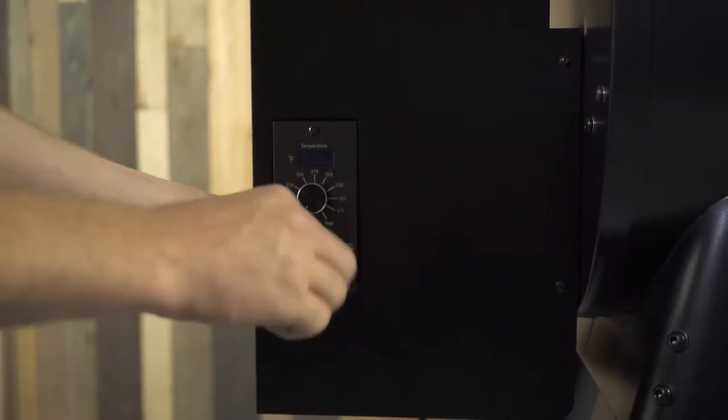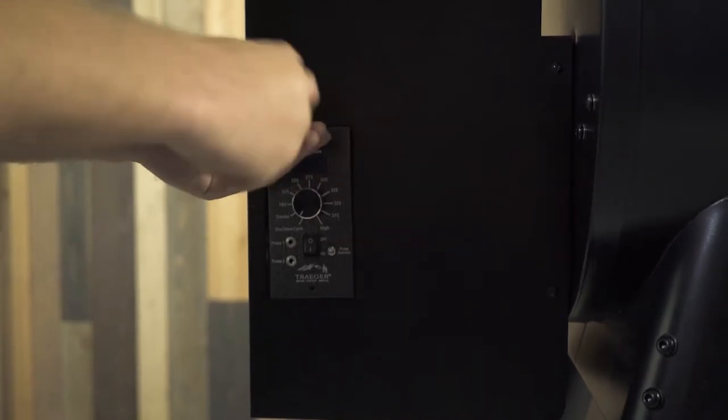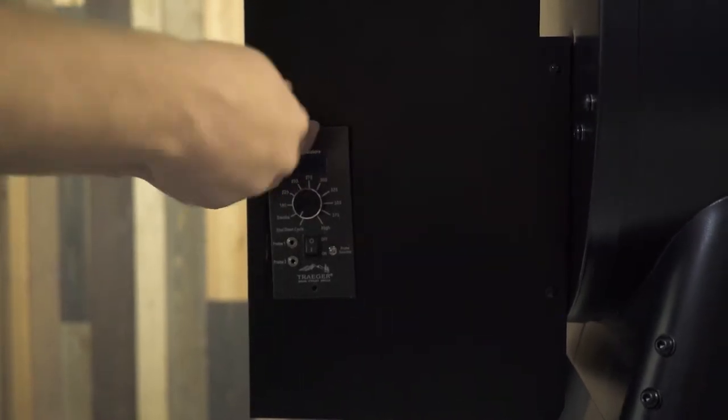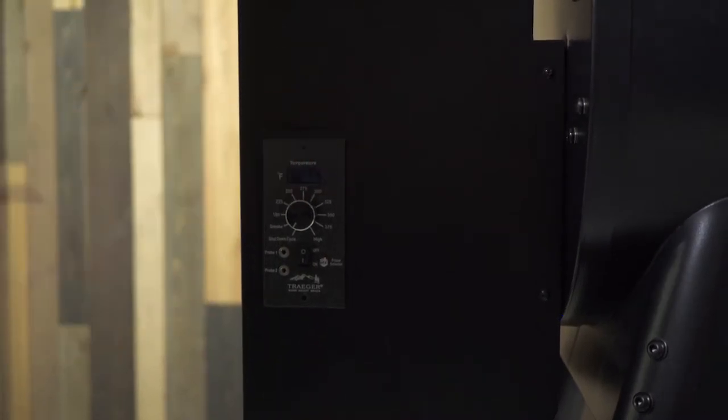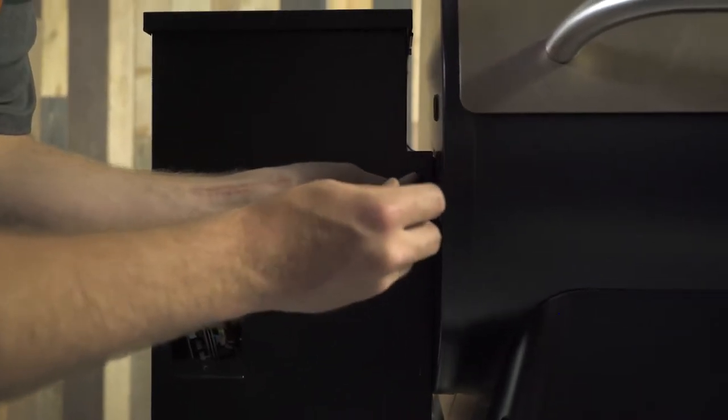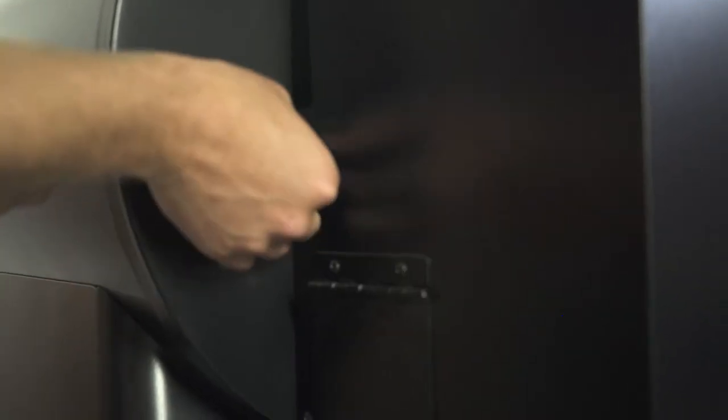With the Phillips screwdriver, remove the two screws mounting your controller to the hopper. Make sure your pellet hopper is completely empty of any pellets. After that, you'll want to remove the four screws that mount the hopper to the side of your grill. There's two screws in the front and two in the back.